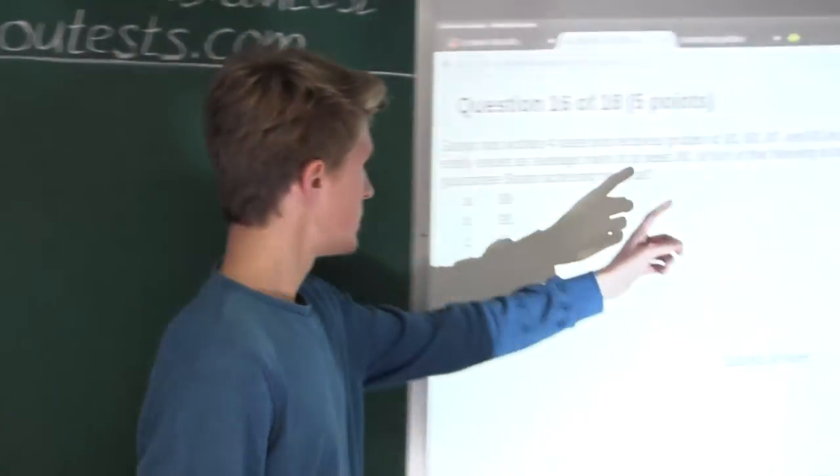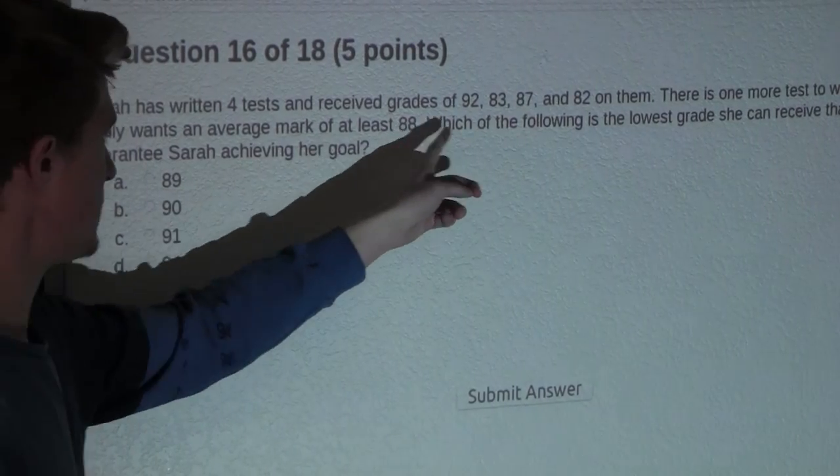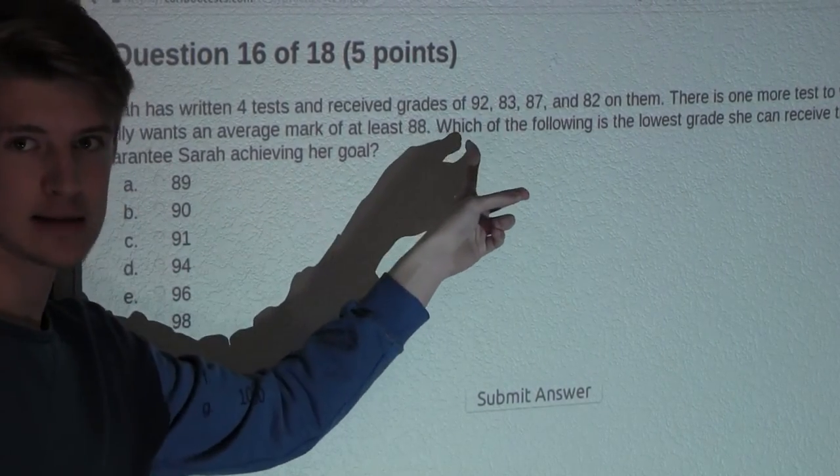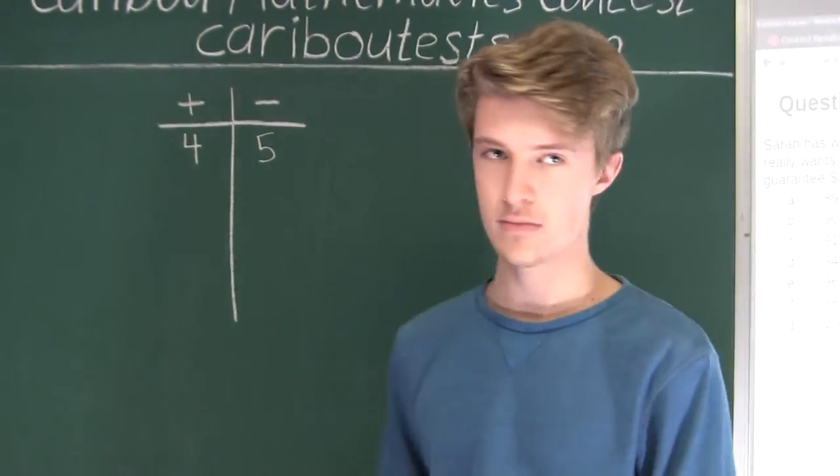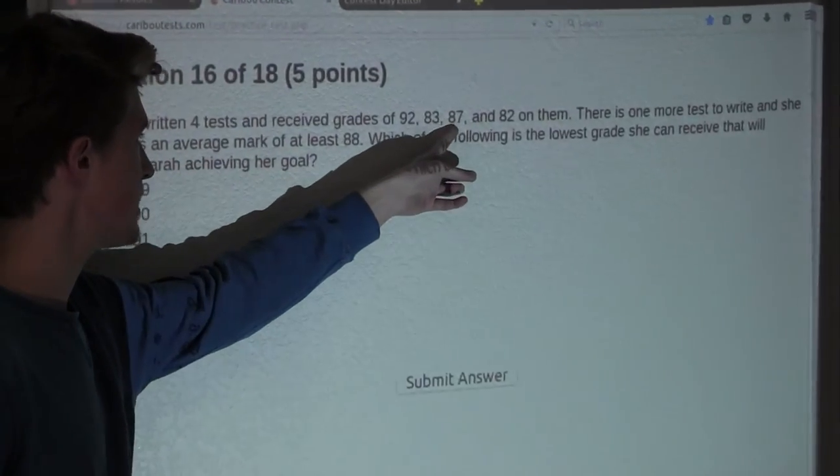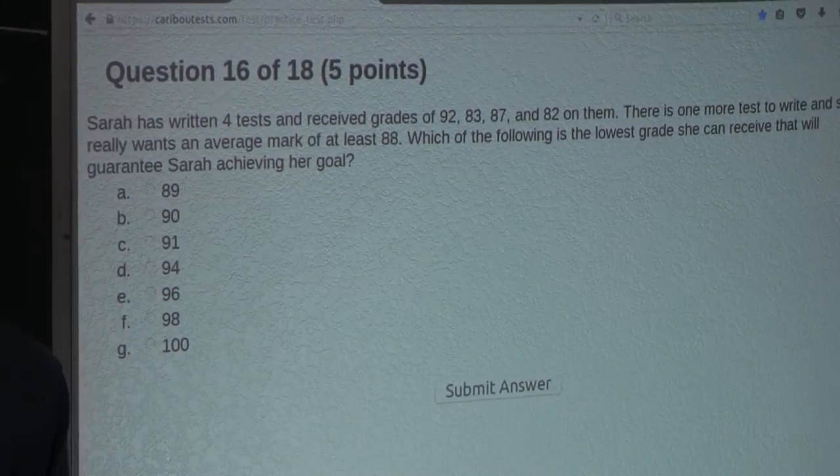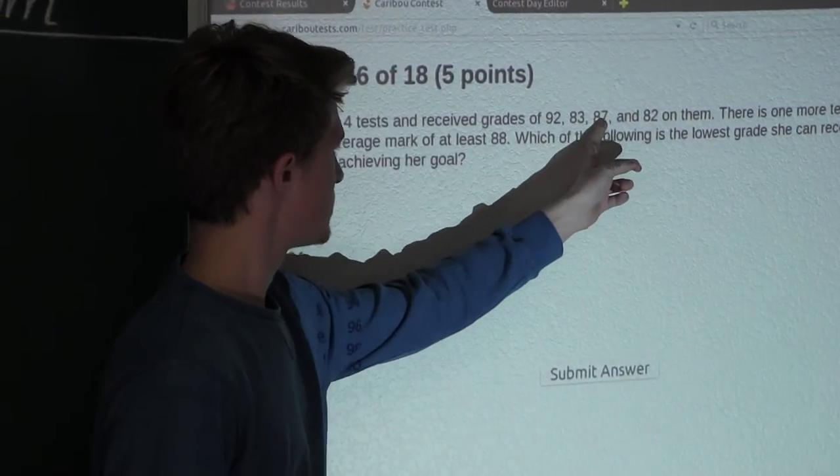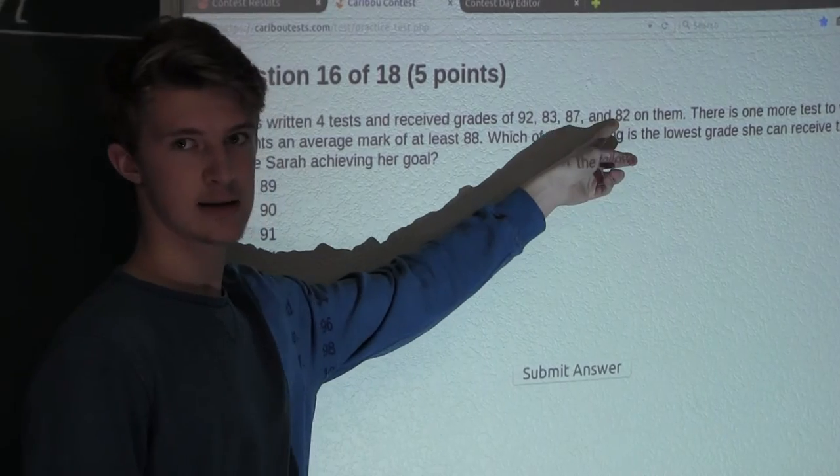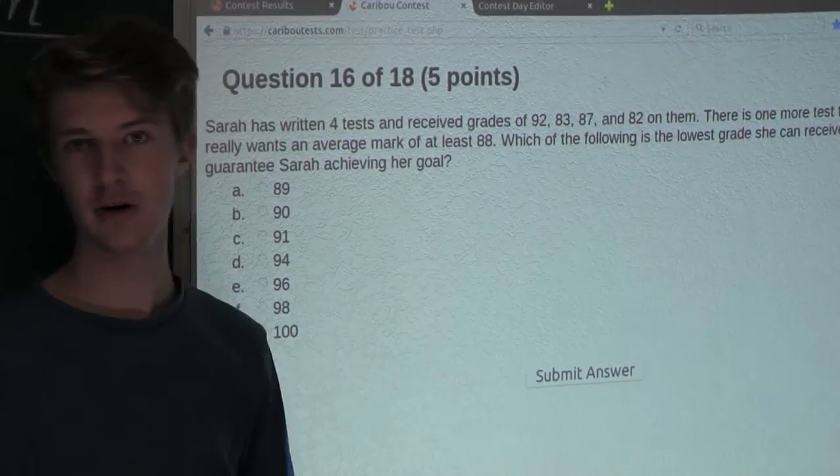Now for the next test she got 83. 88 minus 83 is 5 less than her intended average, so we'll put 5 over here. Then her next test was 87. 88 minus 87, she only got 1 less than her intended average, so we'll have 1 here. And finally, her 4th test mark, 82. 88 minus 82 is 6 less than her intended average.